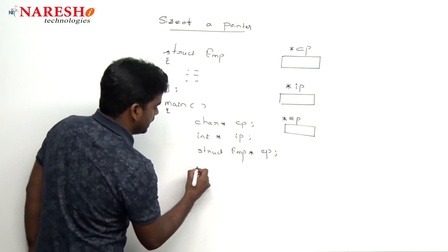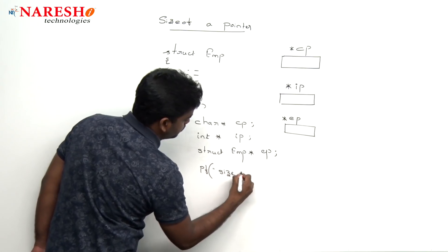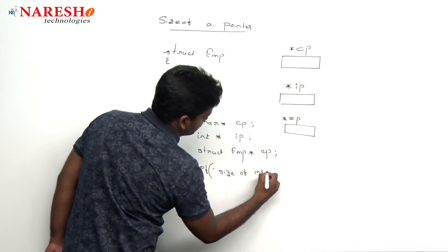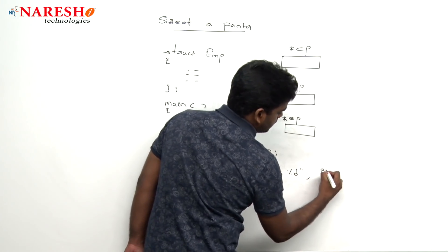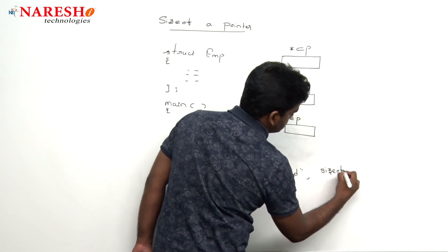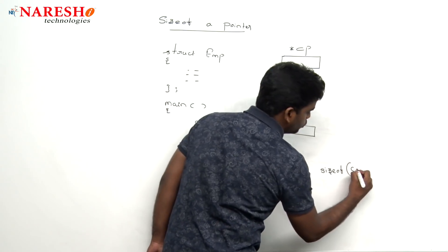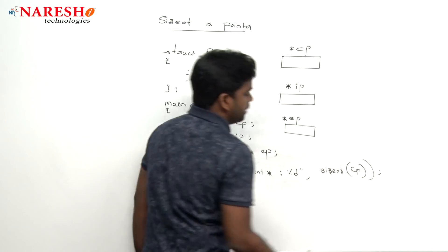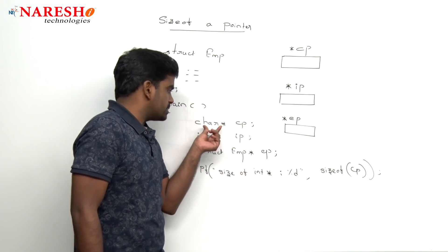So whenever we are checking that printf, just sizeof integer pointer, percentage d and we are writing that sizeof function and we are passing simply cp as a variable. We have two options: either you can pass the variable or you can pass the type also.